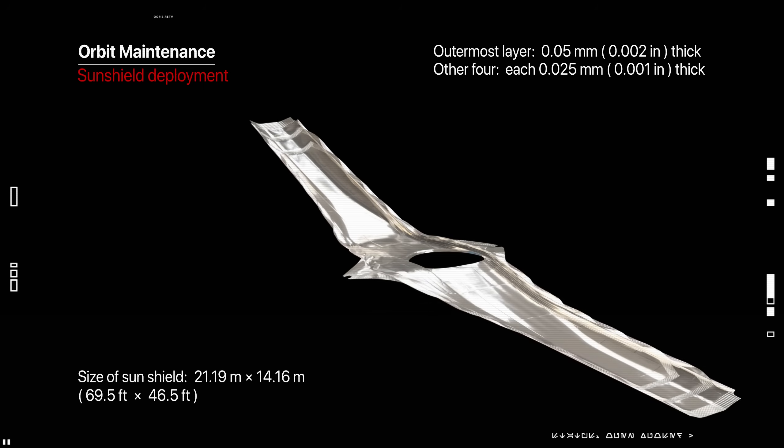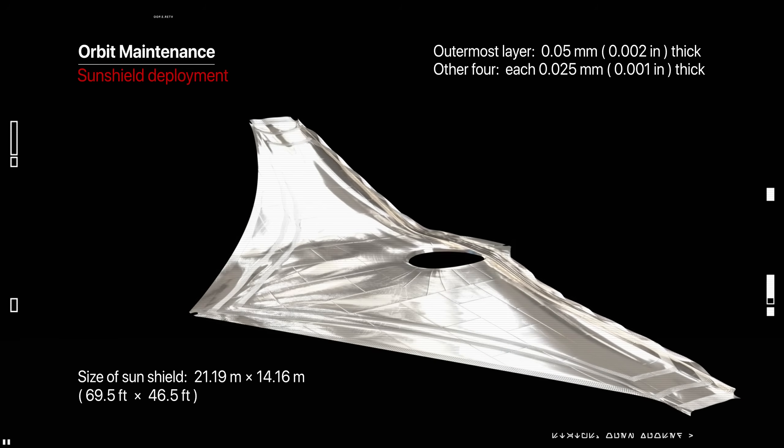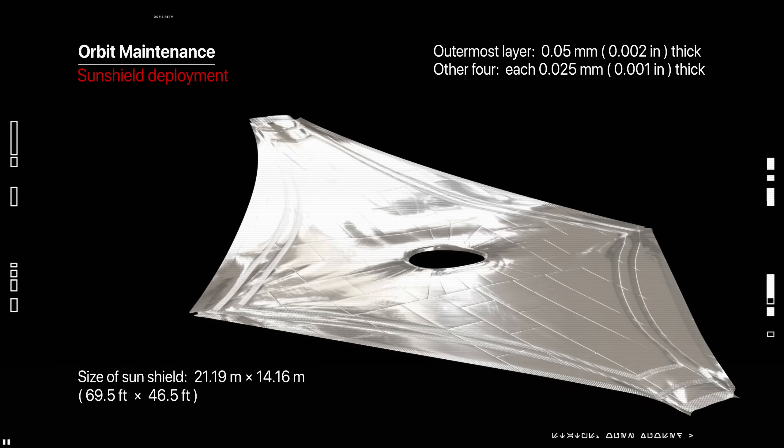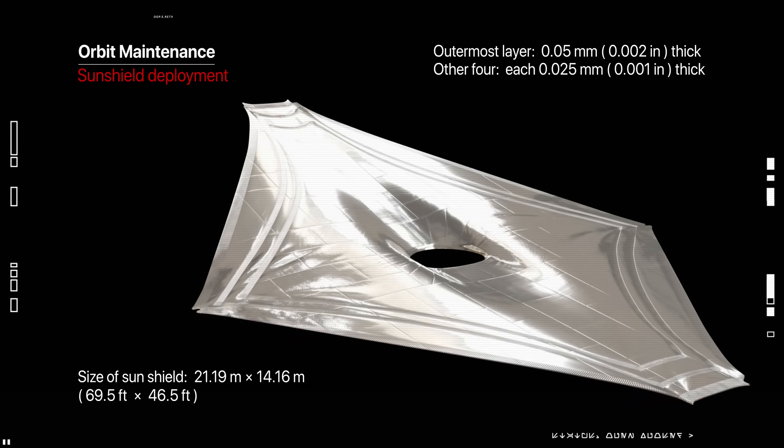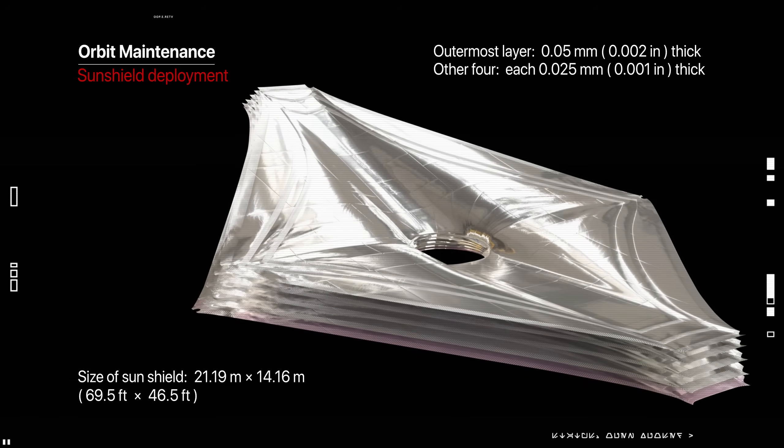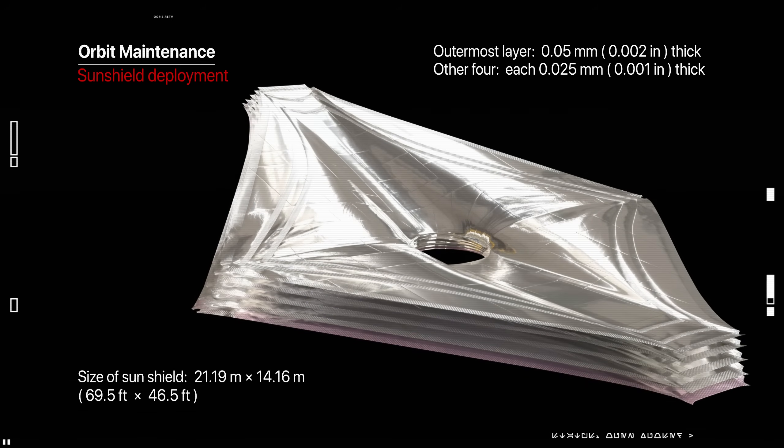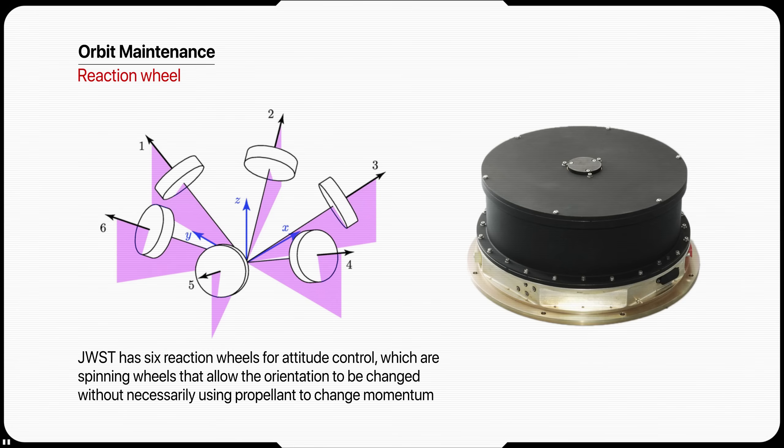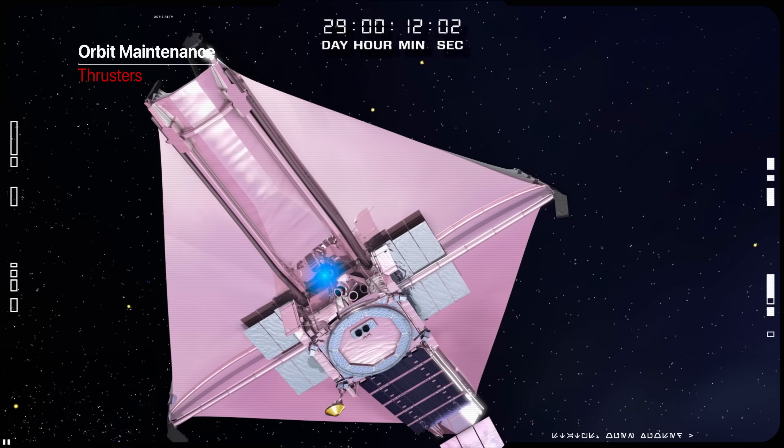However, James Webb's large sunshield, roughly the size of a tennis court, is subject to significant solar radiation, which results in both a force and a torque. The direction of solar force varies as the observatory attitude changes from observation to observation. The solar torque is balanced by reaction wheels, but periodically the accumulated momentum is dumped by firing thrusters.